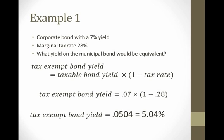In other words, if the municipal bond and corporate bond are similar in their other characteristics like their rating and liquidity overall, then we would expect an investor would be indifferent between a tax exempt bond that gives us 5.04% and a taxable bond that gives us 7%. Of course, this is all subject to a tax rate of 28%.